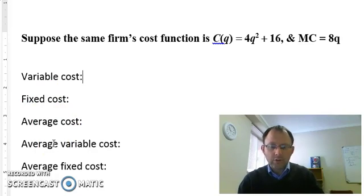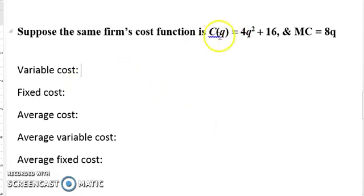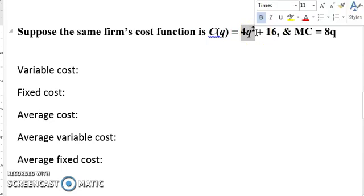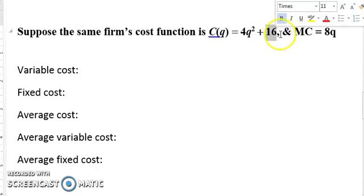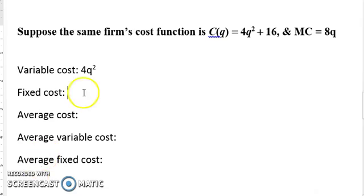We're going to derive these values from the cost function. Starting with variable cost: from the equation, 4Q squared is the variable cost component and 16 represents the fixed cost — we still have to pay that even with no output. So variable cost equals 4Q squared. Since we don't have a specific price or quantity, this is sufficient. Fixed cost is 16.